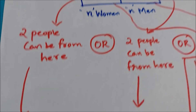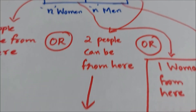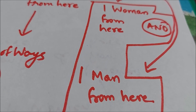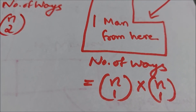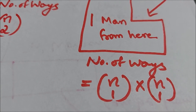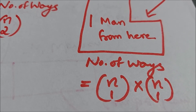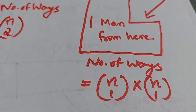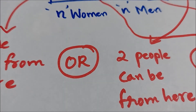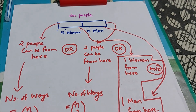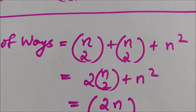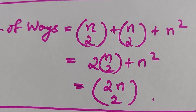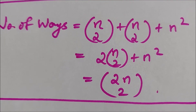The number of ways of selecting two people from n women is C(n, 2), and similarly the number of ways of selecting two people from n men is C(n, 2). For the case of one woman and one man, we select one woman in C(n, 1) ways and one man in C(n, 1) ways, so by the product rule the total is C(n,1)·C(n,1) which equals n².